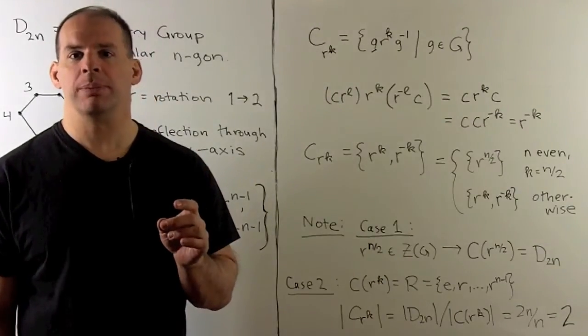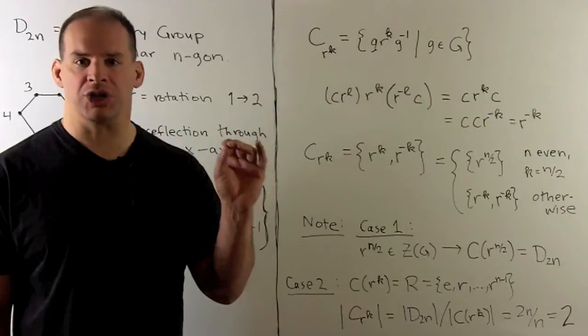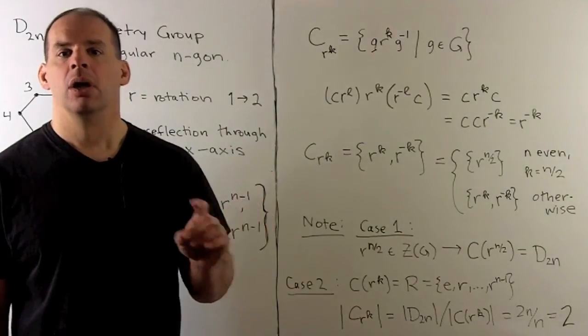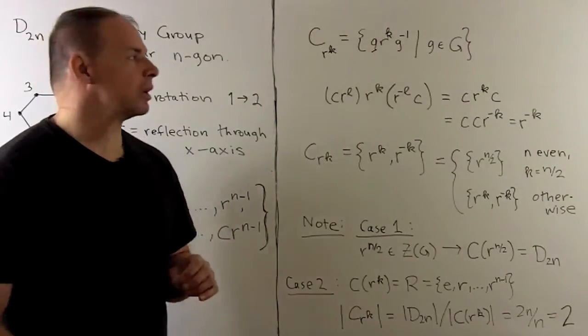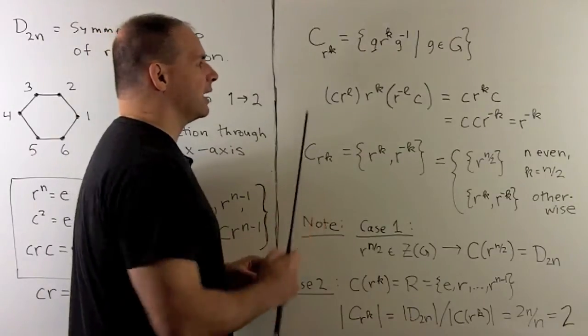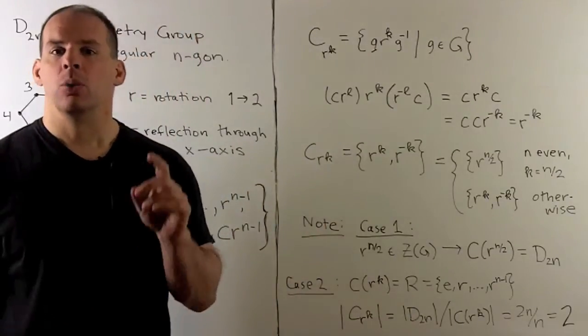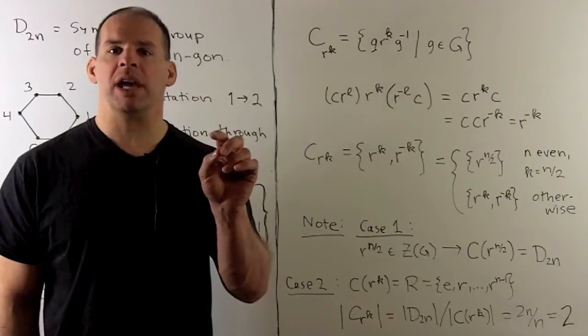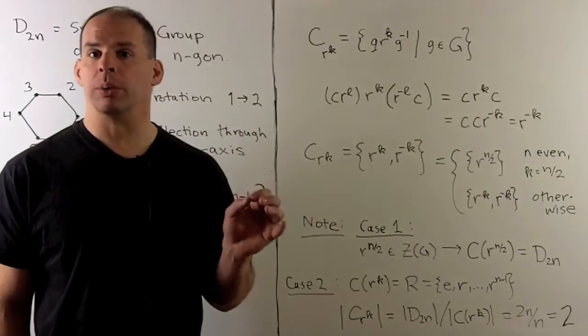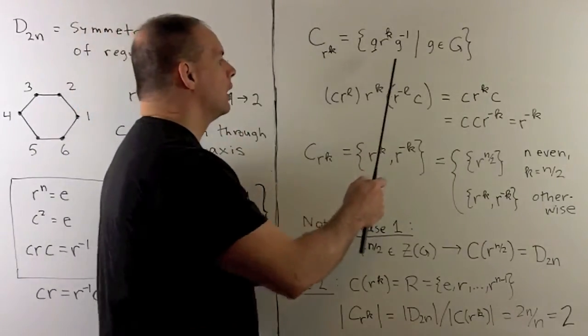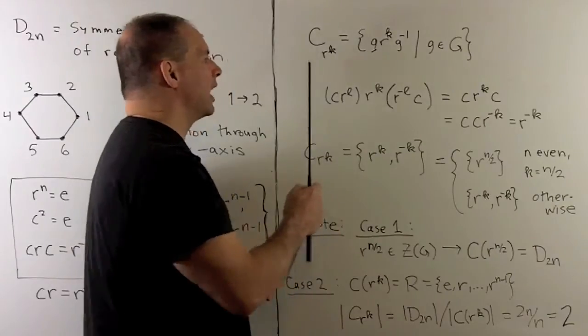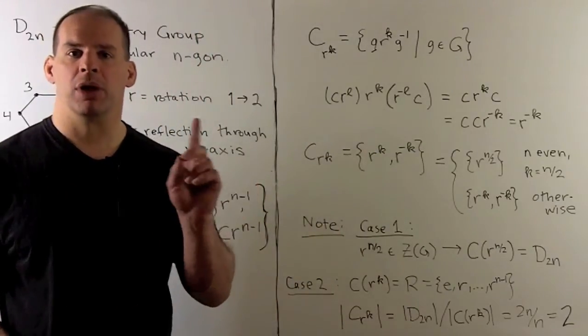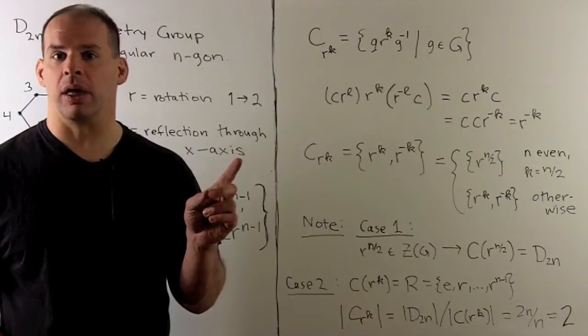For the class equation, we first find the conjugacy classes. We'll start with the rotations. I'll choose some r to the k, and we'll assume this is not the identity element. We take r to the k, and then conjugate by all possible elements in the group. If we conjugate by another rotation, we just get back r to the k, because the rotations commute with one another.